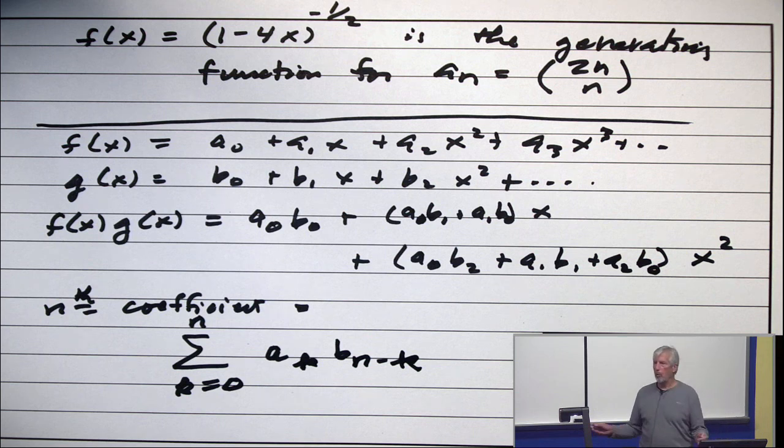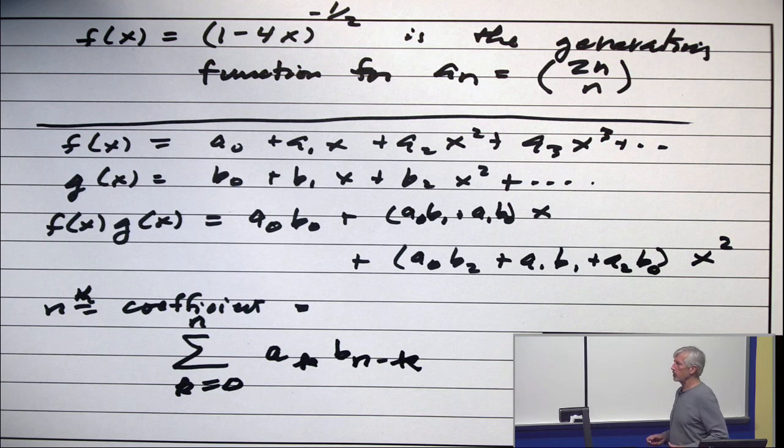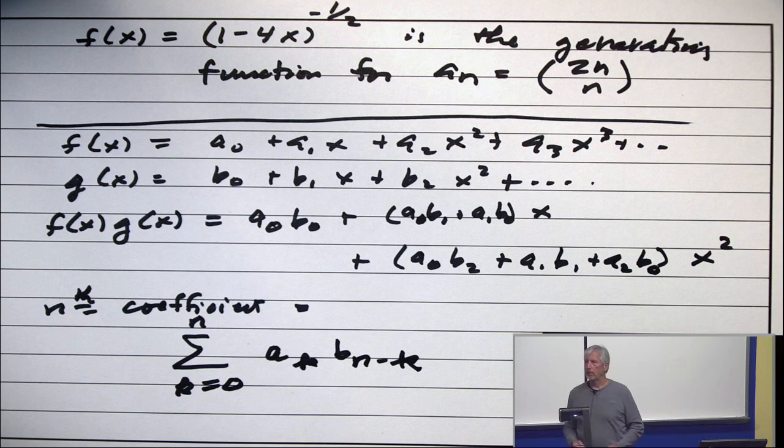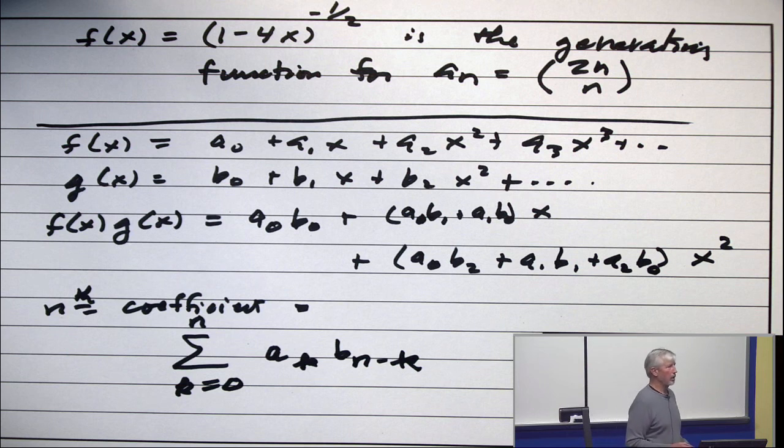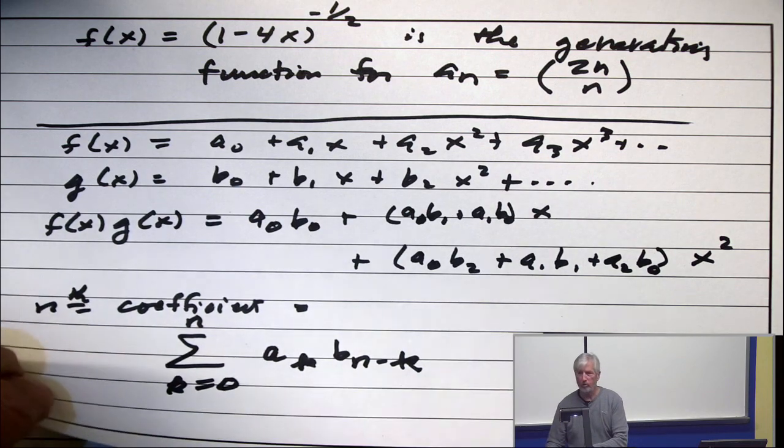I mean, there's no, this is not calculus, discrete math. This is high school algebra. How do you multiply two polynomials together? But are you with me on this formula? Okay, now, watch this.